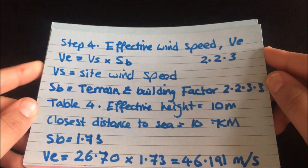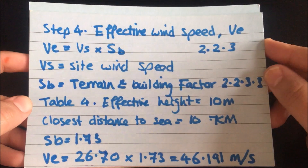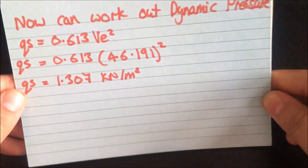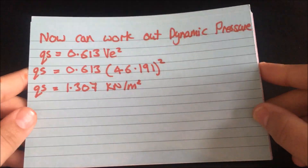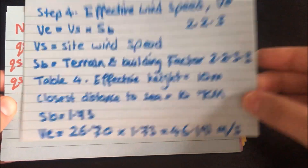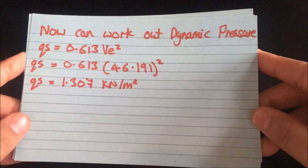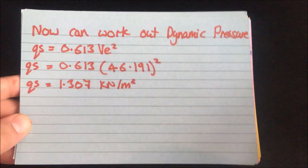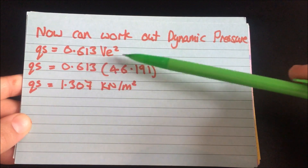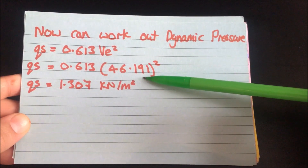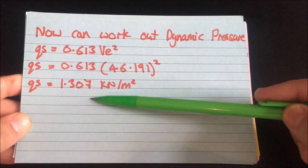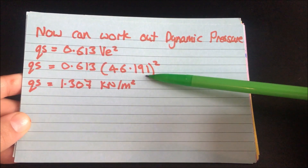So now we're a step closer to working out our net pressure. Now that we have VE, which we've just worked out, we can go back and work out our dynamic pressure using the formula QS equals 0.613 times VE squared. Substituting that value in, we get a dynamic pressure QS of 1.307 kilonewtons per meter squared.